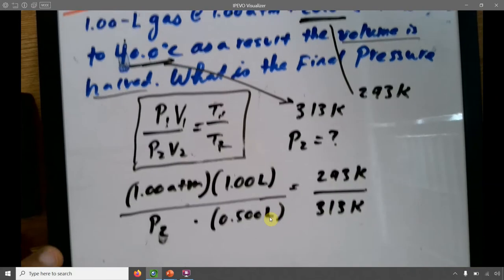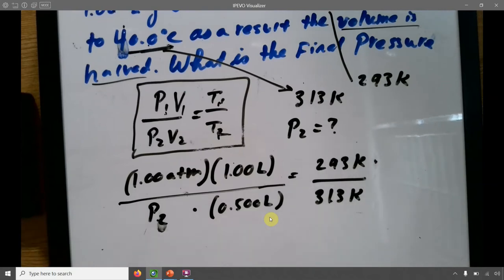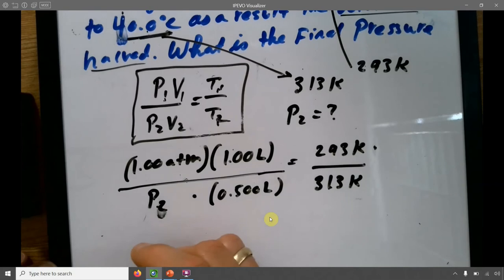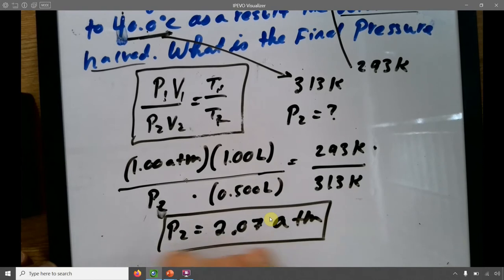And I can solve this. Basically, I can just bring this P over here and multiply both sides by 313 and divide by 293. Whatever. You play around with this. I'm confident you can do this. And you find that P2 here is 2.07 ATM. And that's the correct answer for this example.